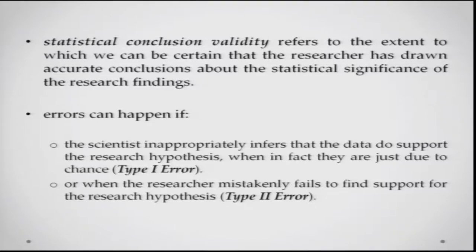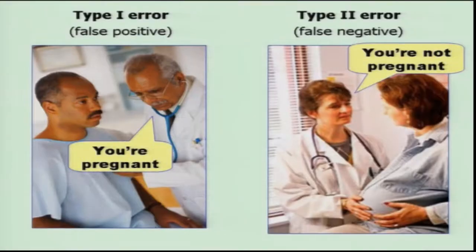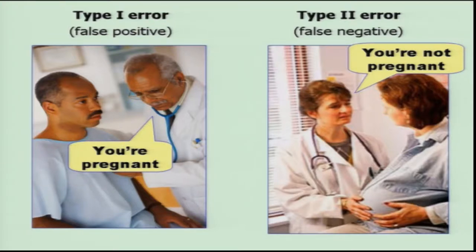Statistical conclusion validity refers to the extent to which we can be certain that the researcher has drawn accurate conclusions about the statistical significance of research findings — whether two things are statistically significantly different from each other. There are two possibilities of errors: you can sometimes say there is an effect when there is not — a false positive — or you can sometimes dismiss an effect when there actually is one — a false negative, also called a Type 2 error. These are common ways in which statistical conclusion validity may be thwarted.